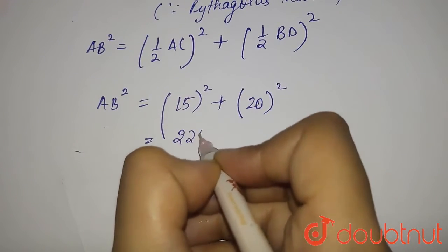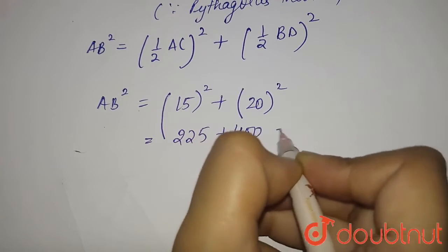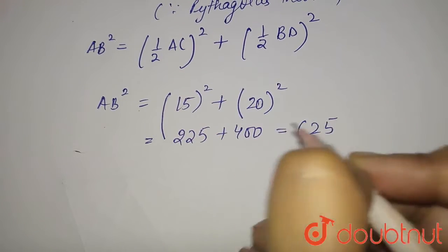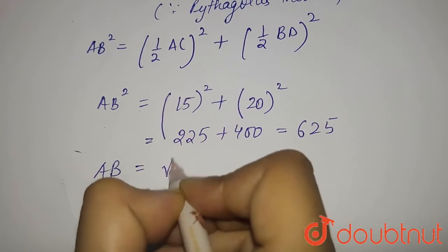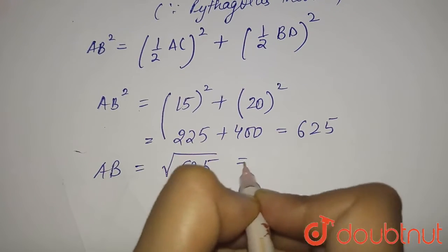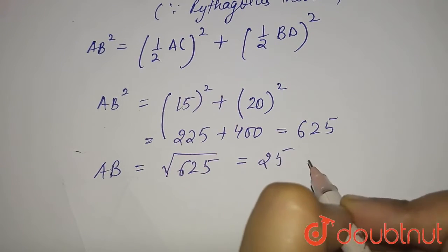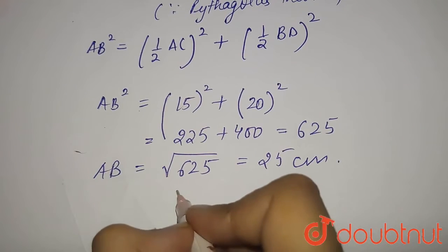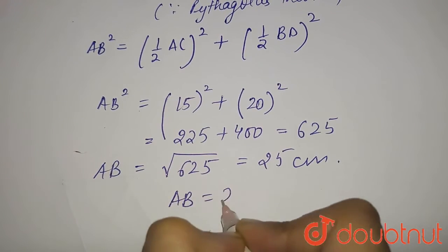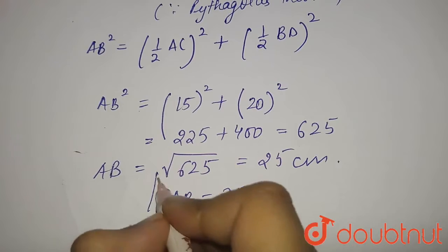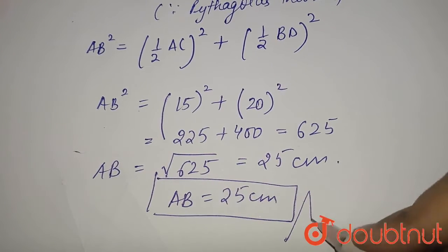So 15² is 225 plus 400 equals 625. So, now AB equals the square root of 625. That simply is nothing but 25 centimeters. So, the length of the side of the rhombus is 25 centimeters. And this is the required answer.